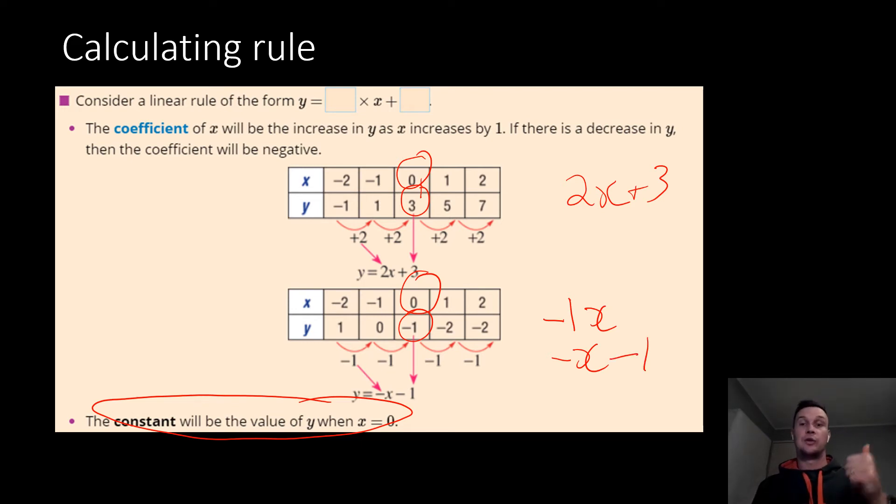So you find it in two ways. You look at what it's either increasing or decreasing, the y, and then you just look for a 0, the number at 0, and you see what the y is in that, and that will give you the constant.